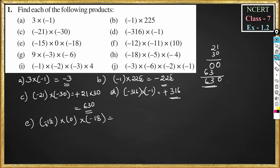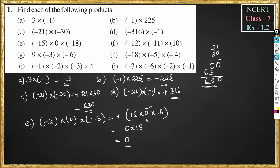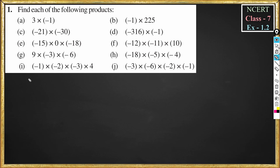For part e: minus 15 into 0 into minus 18. Minus into plus is minus, and minus into minus is plus, but this becomes 15 into 0 into 18. Now 15 into 0 is 0, and 0 into 18 is 0. So 0 into anything is equal to 0. The answer is 0.